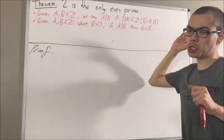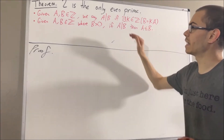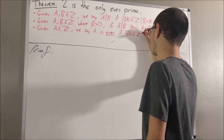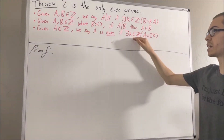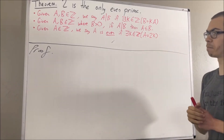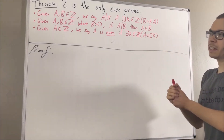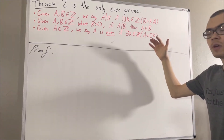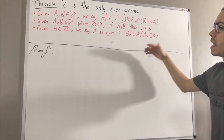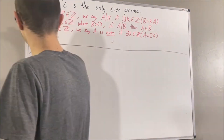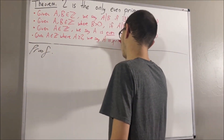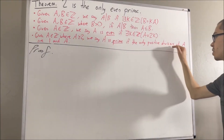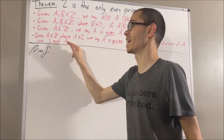Now, given any integer a, we say that a is even if there exists an integer k such that a is equal to 2k. And finally, given any integer a greater than or equal to 2, we say that a is prime if the only positive divisors of a are 1 and a.